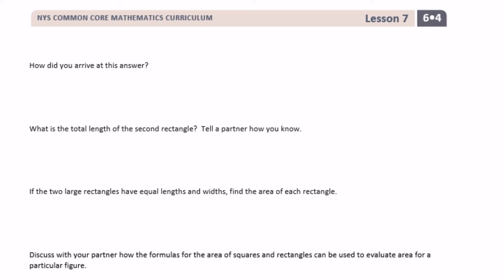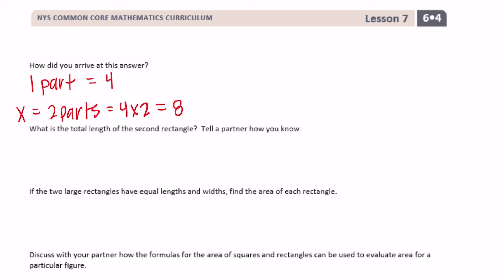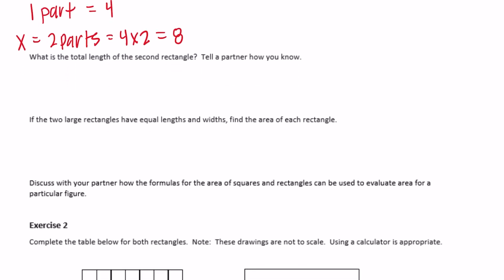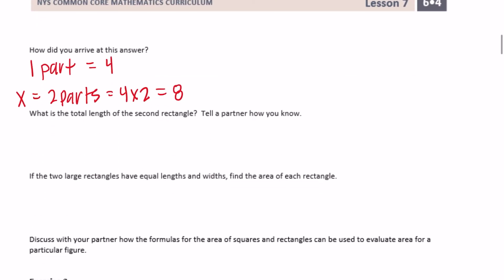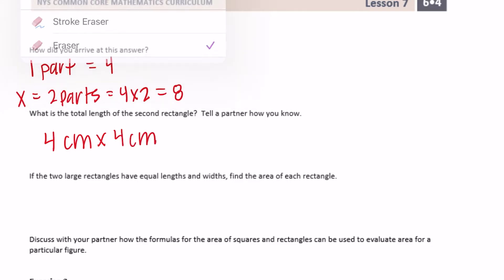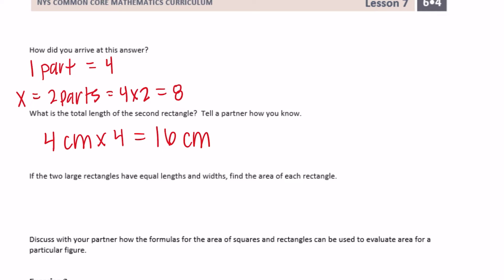How did we arrive at that answer? One part equals 4, and X equals 2 parts, so 4 times 2 equals 8. The total length of the second rectangle: there are 4 parts each of 4 centimeters, so 4 centimeters times 4 parts equals 16 centimeters. Note: we multiply by the 4 parts, so the result is 16 centimeters.